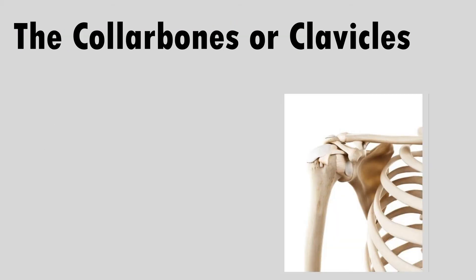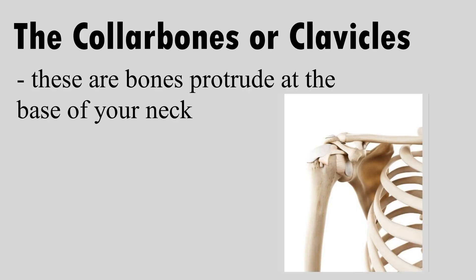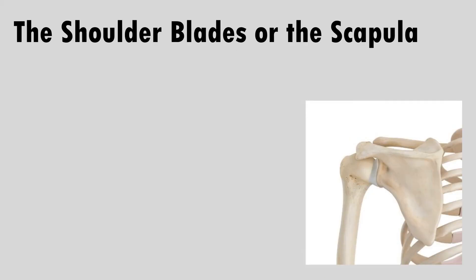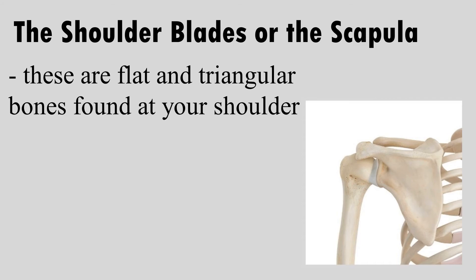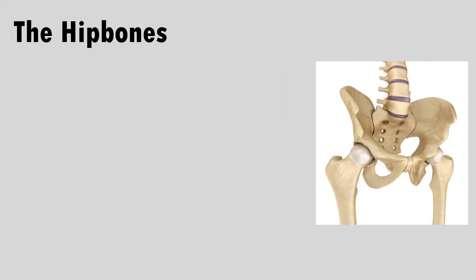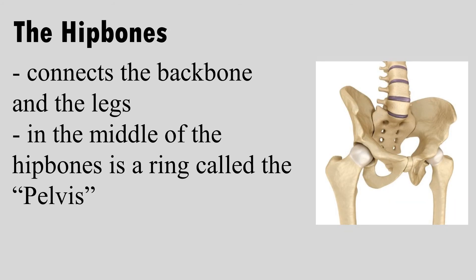The collarbones or clavicles are bones that protrude at the base of your neck. The shoulder blades or scapula are flat and triangular bones found at your shoulder. The hip bones connect at the backbone and the legs, and in the middle of the hip bones is a ring called the pelvis.